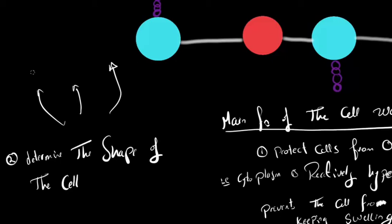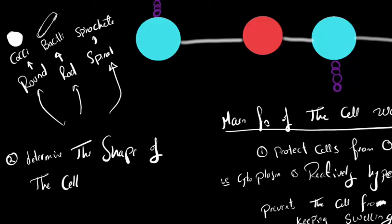The second function of the cell wall is that it determines the shape of the cell, because it is a rigid structure. If it is round like a football or basketball, the bacterium is a coccus. If it is rod-shaped, the bacterium is a bacillus. If it is spiral-shaped, the bacterium is a spirochete. If it has no definite shape, it is called pleomorphic, meaning 'many-shaped.'